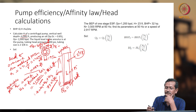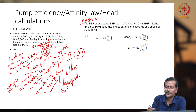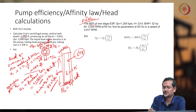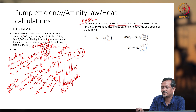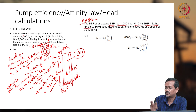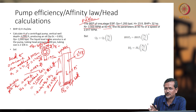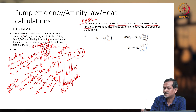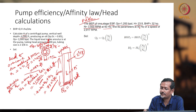This problem gives the BEP (best efficiency point) of a single-stage ESP. Flow rate Q1 = 1200 barrels per day, head 23 feet, BHP is also given, and N is at 60 Hz, which means N1 = 3500 RPM. Find these parameters at 50 Hz, corresponding to a speed of 2917 RPM. For 50 Hz, N2 will be approximately 2900 RPM (assuming the same speed drop of 100 RPM applies).